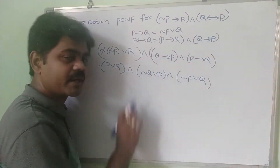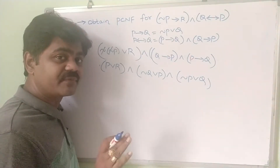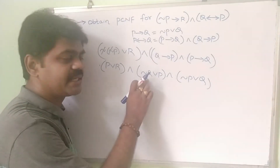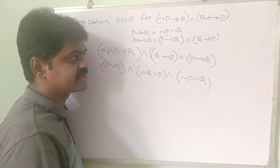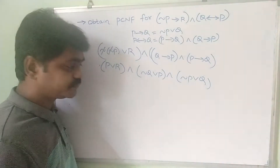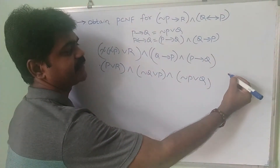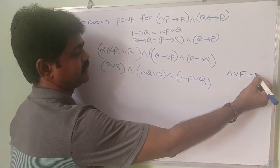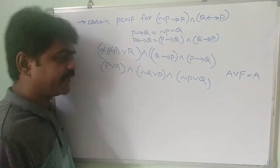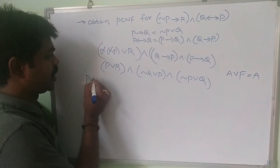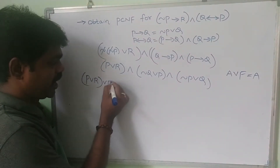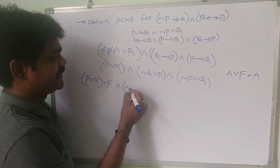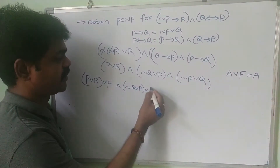What we need to do now is check for missing literals. In sum 1 (p or r), q is missing. In sum 2 (negation q or p), r is missing. In sum 3 (negation p or q), r is missing. As we know, a or false equals a, so we write: p or r or false, negation q or p or false, and negation p or q or false.